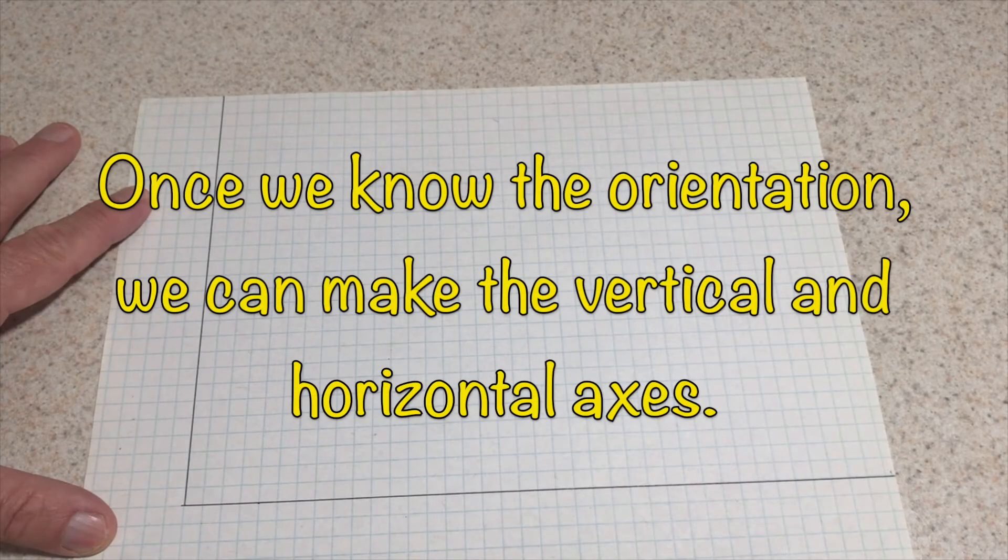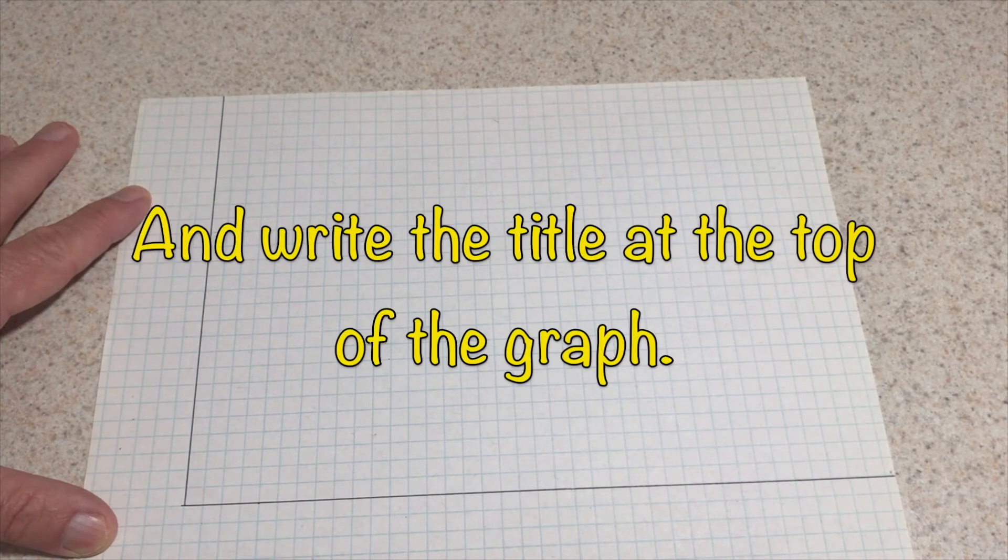Once we know the orientation, we can make the vertical and horizontal axes and write the title at the top of the graph.